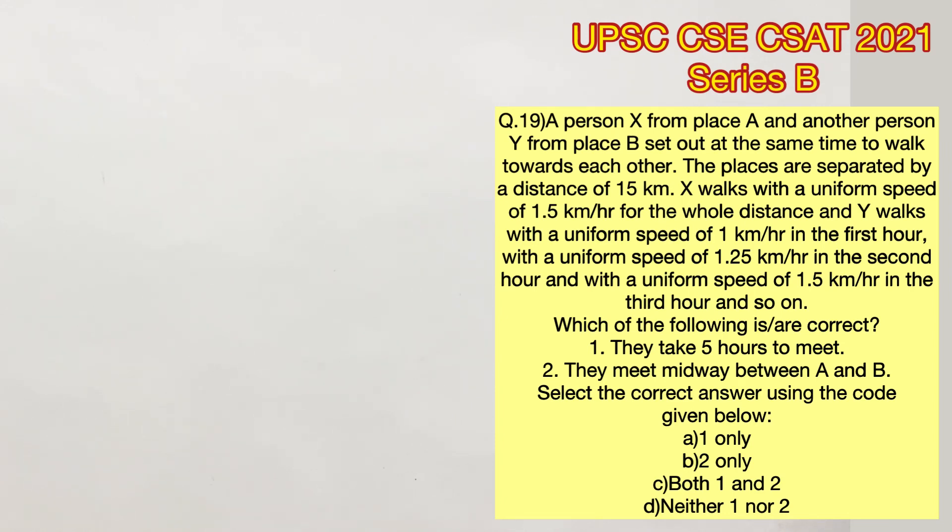It's given that X starts from place A and another person Y starts from place B. They start at the same time and the distance between them is 15 kilometers.